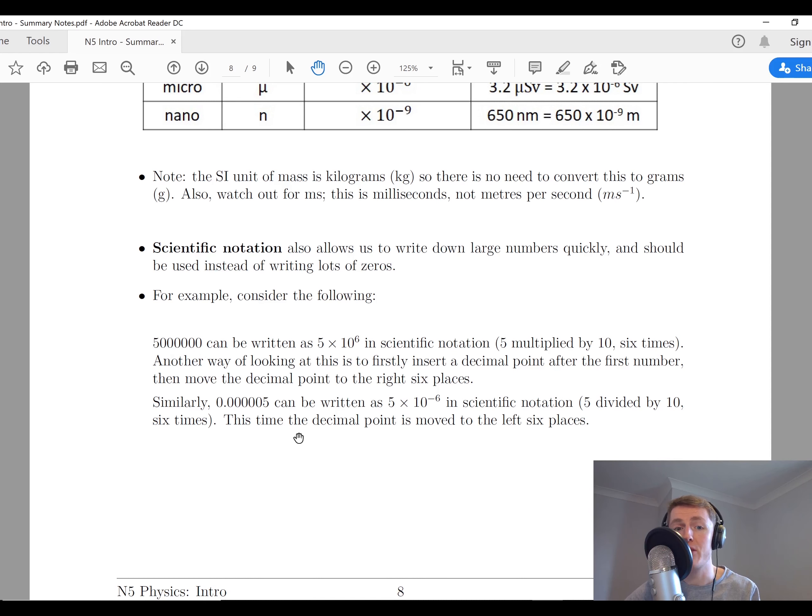Similarly, to write small numbers we would use negative powers in scientific notation. So this really small number, 0.00005, can be written as 5 times 10 to the power of minus 6, which is 5 divided by 10 six times. This time again, if you wanted to see what the power is going to be, we put the decimal point after the 5, and then we move back 1, 2, 3, 4, 5, 6 places to get to that number.